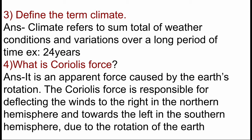What is Coriolis force? It is an apparent force caused by the earth's rotation. The Coriolis force is responsible for deflecting the winds to the right in the northern hemisphere and towards the left in the southern hemisphere due to the rotation of the earth. Because the earth rotates on its axis, circulating air is deflected towards the right in the northern hemisphere and towards the left in the southern hemisphere. This deflection is known as Coriolis force.